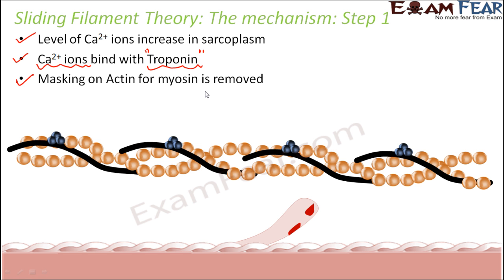Let us take the help of animation to see how exactly this happens. The structure at the top is the actin, and this structure represents myosin — here is the myosin head, this is the myosin neck, and this is the myosin tail. Here are the F filamentous actins, the ball-like structure. The black colored structure is the tropomyosin and these structures are the troponin.